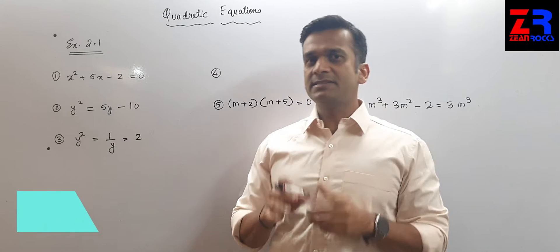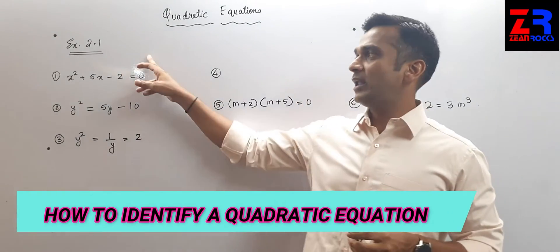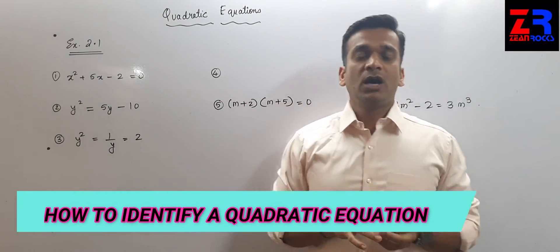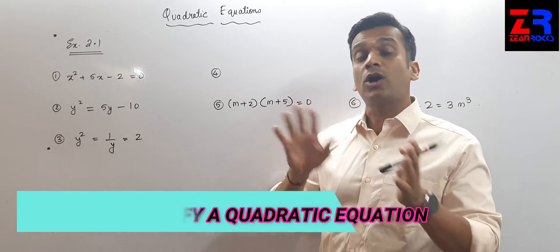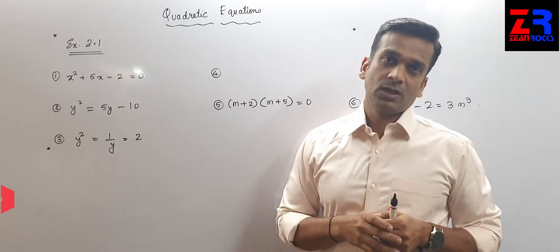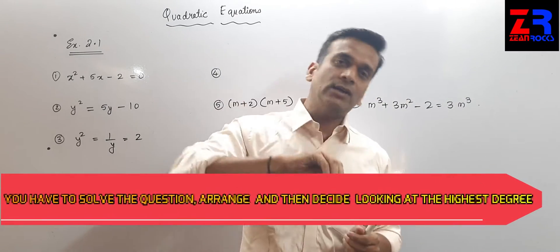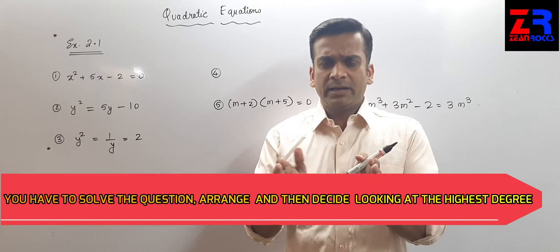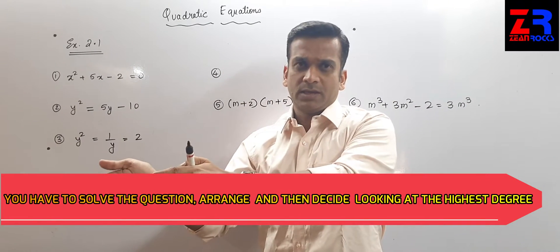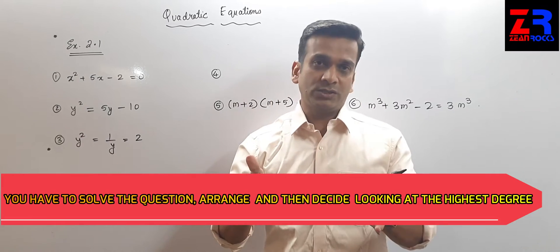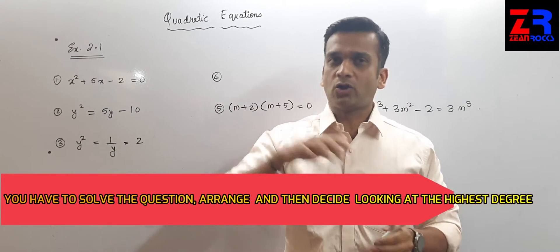The first exercise is exercise number 2.1. In exercise 2.1, the first question asks us to identify whether the following equations are quadratic or not. To identify whether the equations are quadratic or not, always remember to take all the terms on the left-hand side. You have to solve the equation, then decide whether it is quadratic or not.